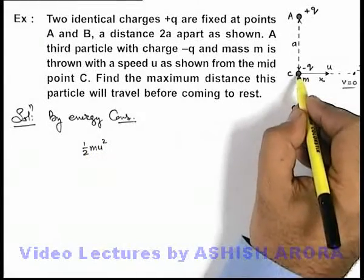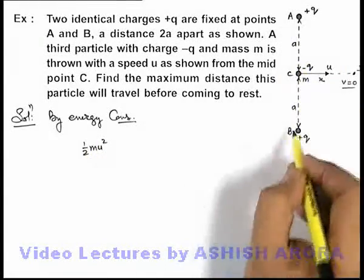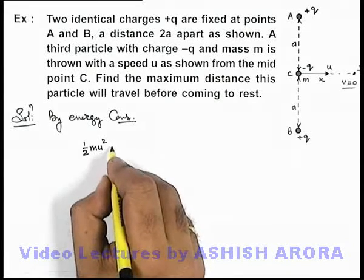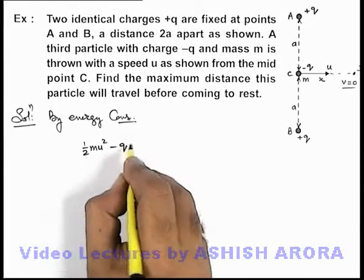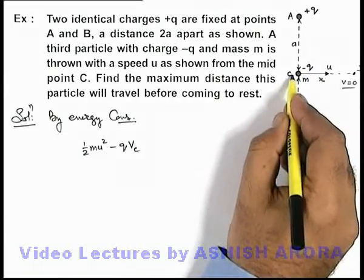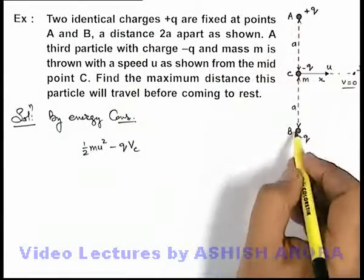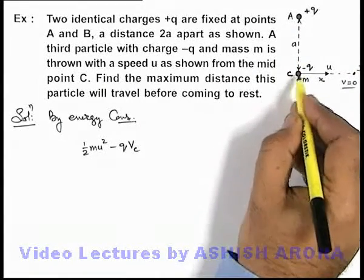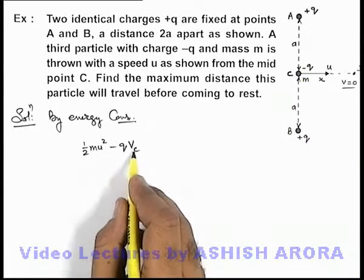The interaction energy of this particle with these two charges can be written as -qVc, because -q is the charge and at point C if potential due to these two charges is Vc, then its interaction energy will be -qVc.